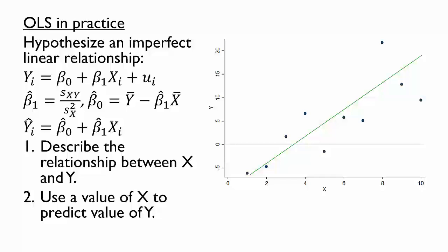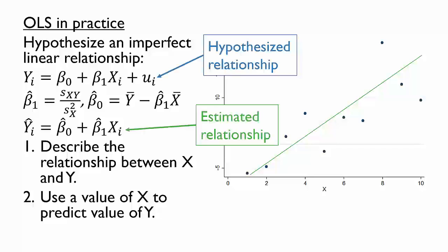Let's now return to a subtle but important distinction we made in writing the equations describing the hypothesized relationship and the estimated relationship. This is the distinction between a population relationship and a sample relationship.